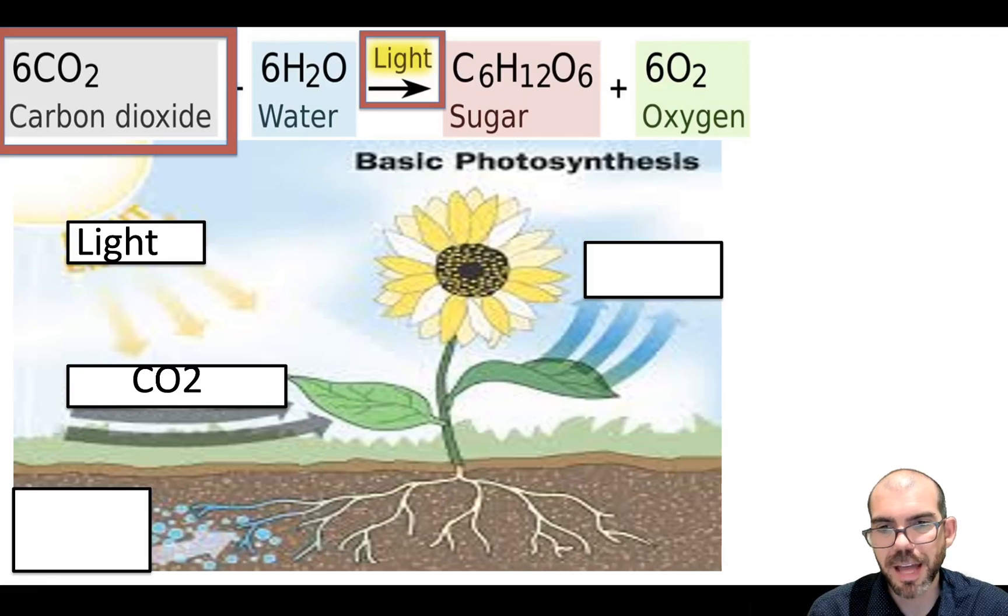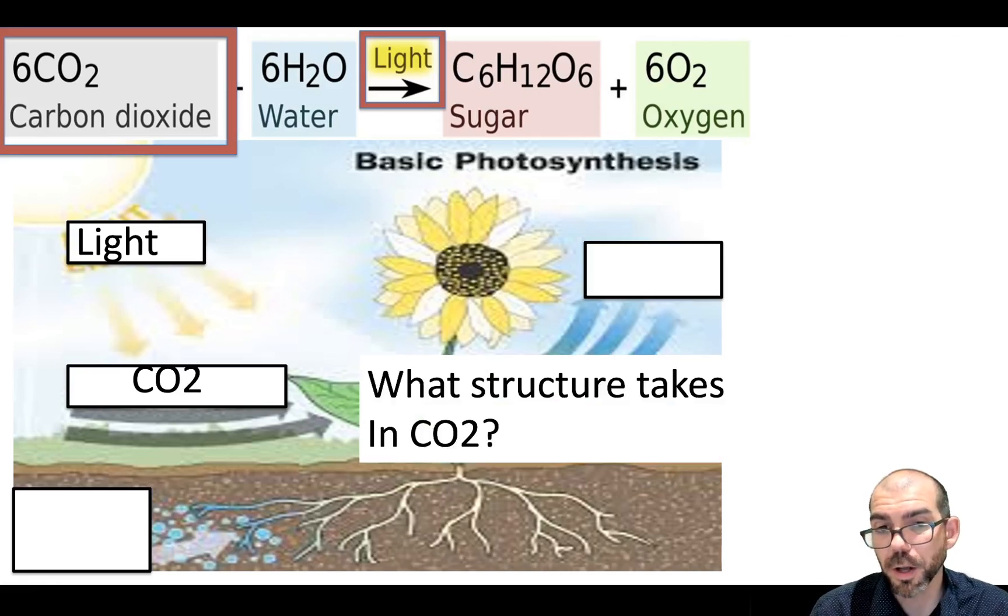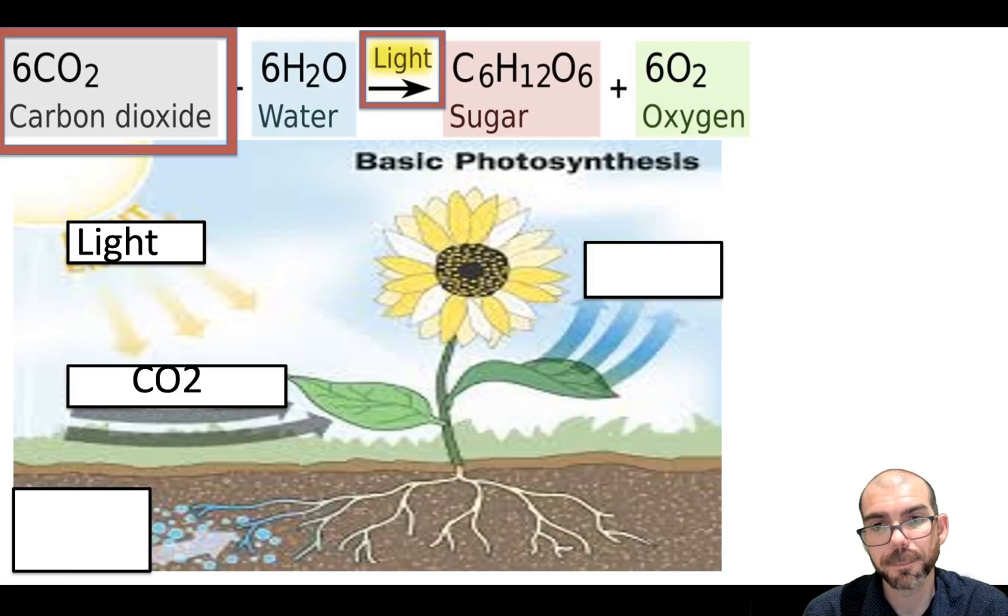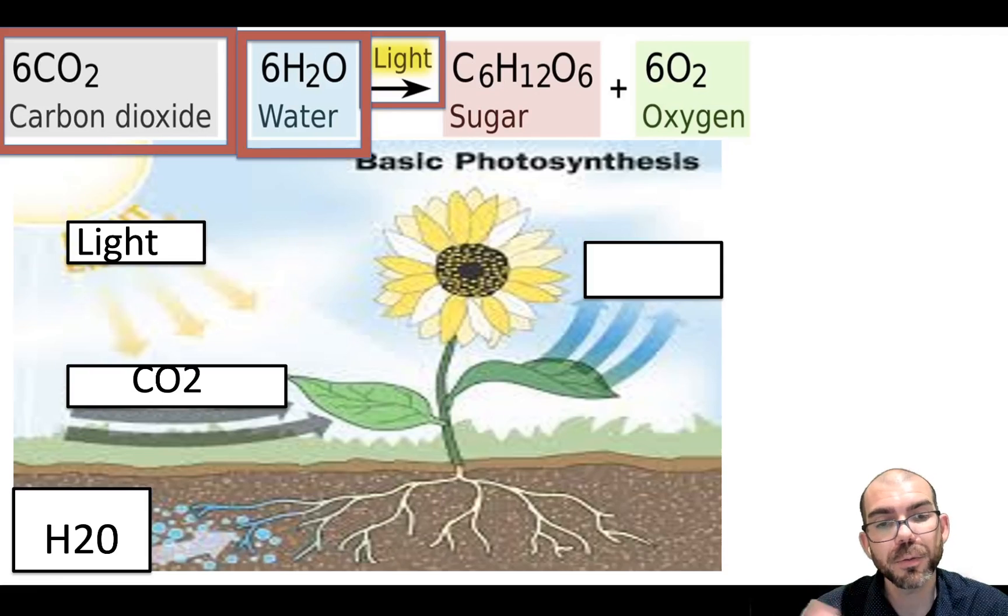For carbon dioxide, that's going to be coming in into what structure in the leaf? The stoma. Specifically, it's going to go to the leaf, and that's where all gas exchange is going to occur. Where's the water going to enter the plant? Through the roots, and it'll go out through transpiration.